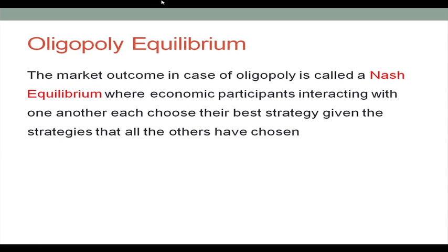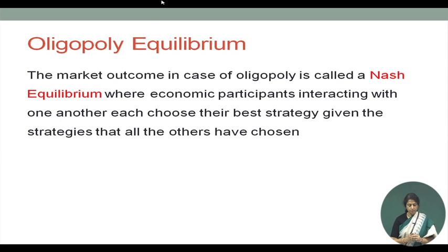Given the strategy chosen by the rival, it is in the best interest of the firm to produce 40 units. Hence, production of 40 units by each firm in our example was a Nash equilibrium, and neither of the firms has any incentive to move away from that output level. This is called Nash equilibrium — where economic participants interact with one another and each chooses their best strategy given the strategies all others have chosen.